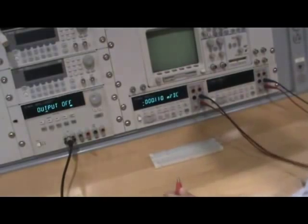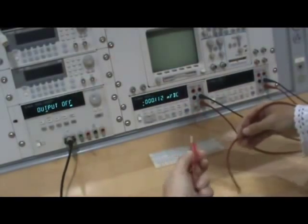Set one DMM to operate as an ammeter and set this in series with the power supply.